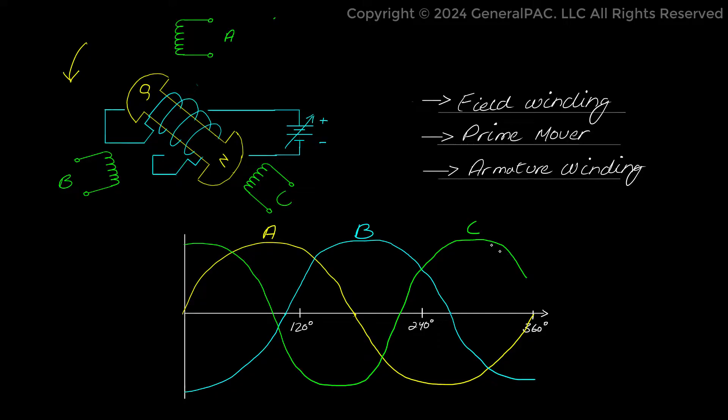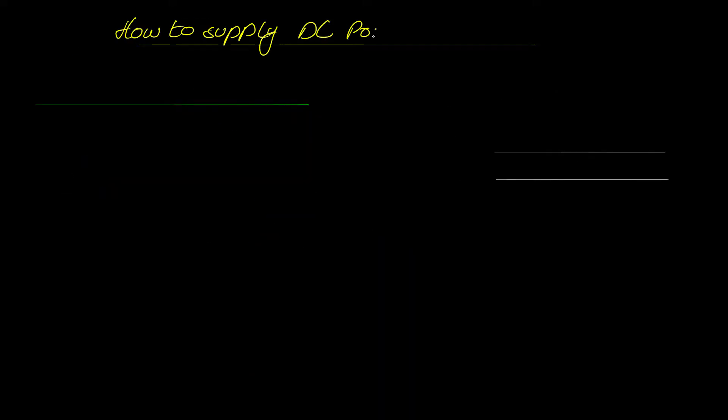So the question which arises here is that how to excite, that is supply DC power to rotor windings. There are two possible ways to do so. The first method is to supply DC power by means of an external DC source using slip rings and carbon brushes.